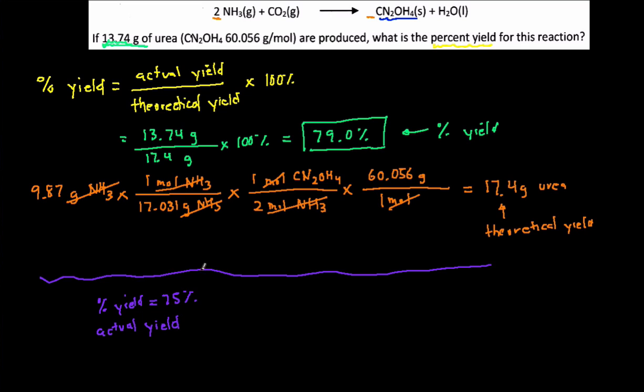So then to do this, we would just set up the same equation, percent yield equals actual yield divided by theoretical yield. But this time, we're going to be solving for actual yield.